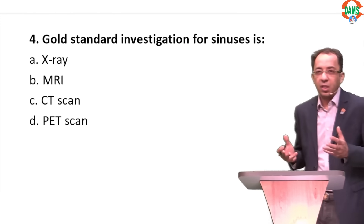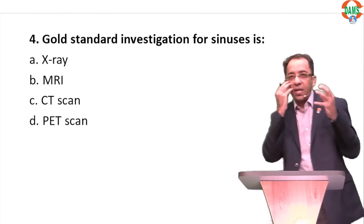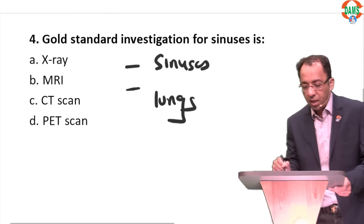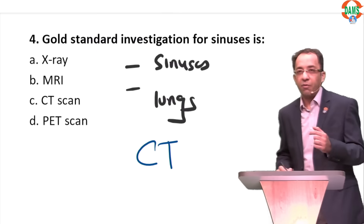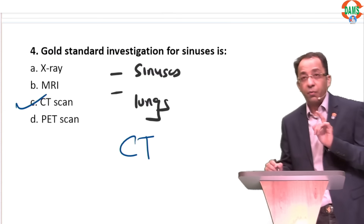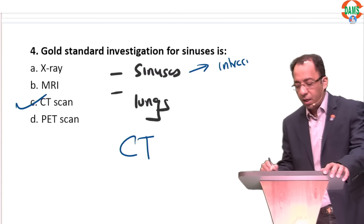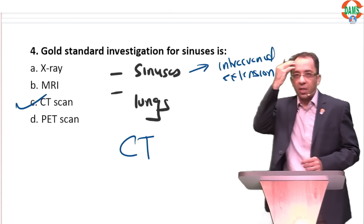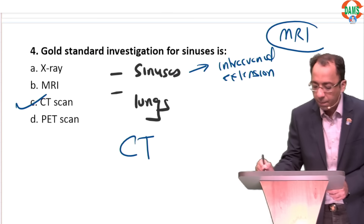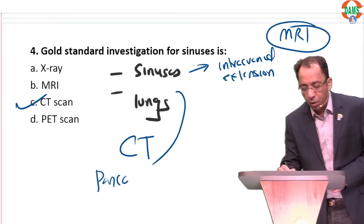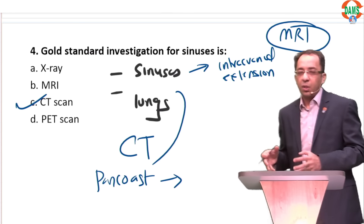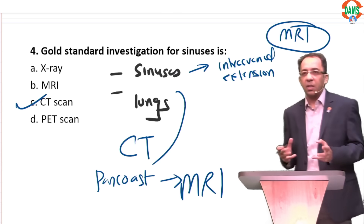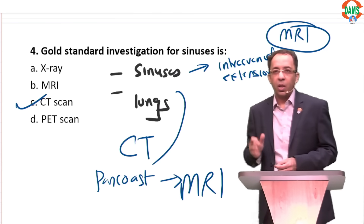Gold standard investigation for paranasal sinuses — a previous FMG question. For sinuses and lungs, both air-filled structures, we prefer CT scan. However, if a sinus disease has intracranial extension — like fungal sinusitis or a tumor — then the answer is MRI. Similarly, for pulmonary pathology like a Pancoast tumor with neural invasion, MRI is preferred. Otherwise, for most sinus and lung conditions, do a CT scan.